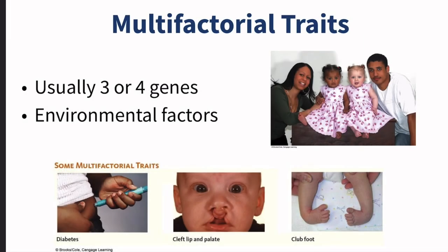In the last video we spoke about multifactorial traits. Remember that they are caused by multiple factors — many genes, often at least three or four, and environmental factors as well. We gave some examples: skin color, height. And here are some other examples: diabetes, cleft lip, cleft palate, and club foot.